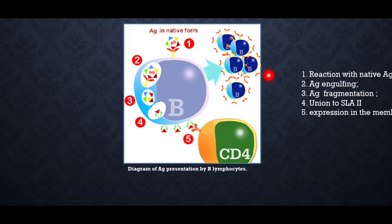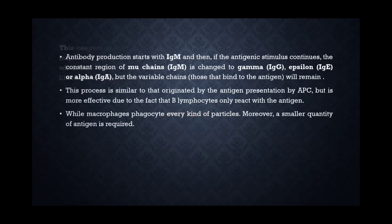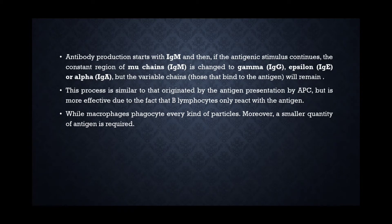Once this happens, the production of immunoglobulins will start. Here, the CD4+ lymphocyte gets stimulated, which results in the initiation of antibody production. Antibody production starts with IgM — immunoglobulin M. If the antigenic stimulus continues, the IgM changes to form other immunoglobulins like IgG, IgE, and IgA. This process is similar to that originated by antigen presenting cells (APCs), but it's more effective due to the fact that only the B lymphocyte reacts with the antigen.